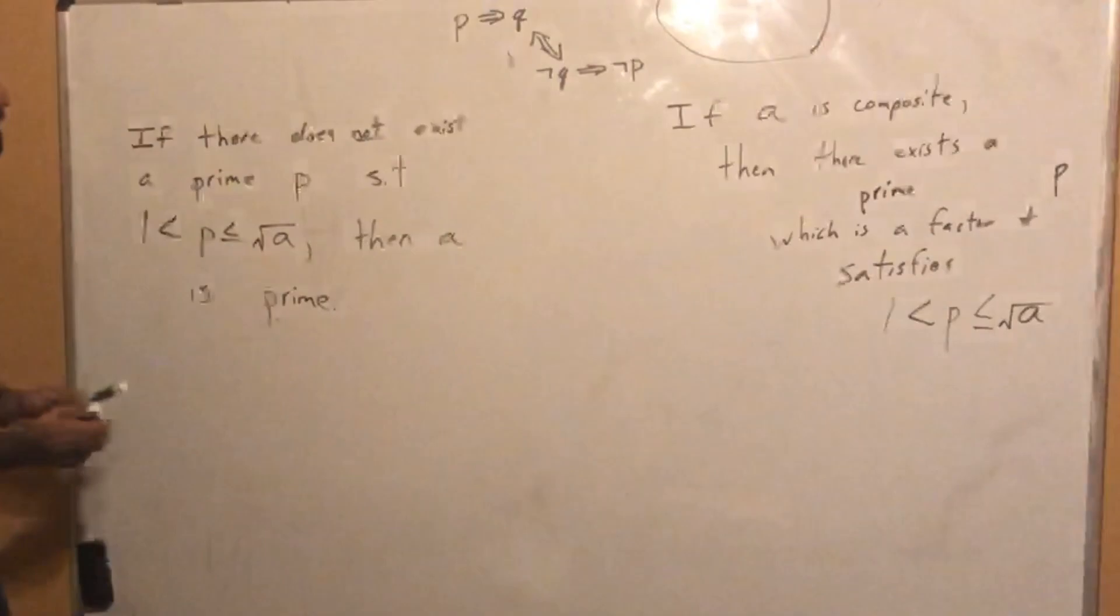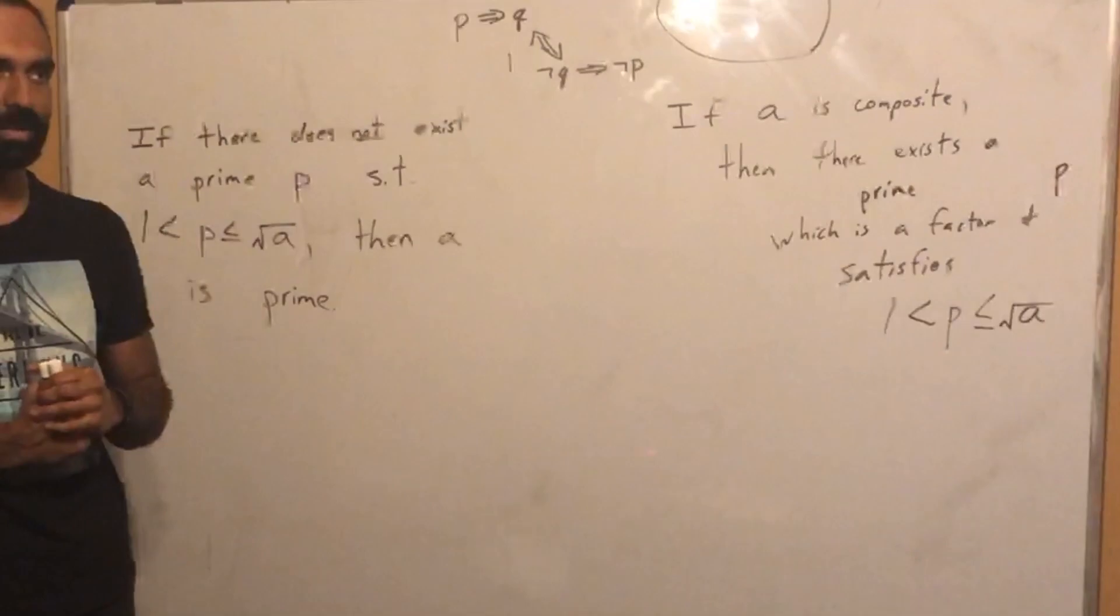Let's write out that contrapositive. If there does not exist a prime P such that that inequality is true, and P divides A, then A is prime. So this gives us a nice test. After you get too big, it gets kind of cumbersome, but it gives us a nice way of quickly testing whether a number is prime or not.